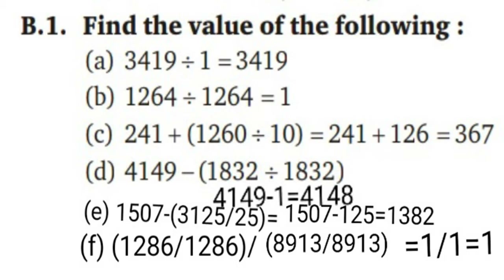Part F: first solve both brackets — both have the same numbers. 1286 ÷ 1286 = 1, and 8,913 ÷ 8,913 = 1. So 1 ÷ 1 = 1.